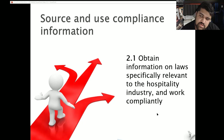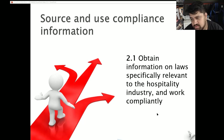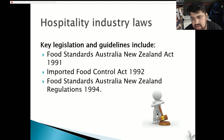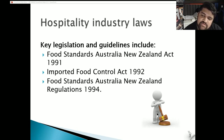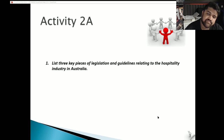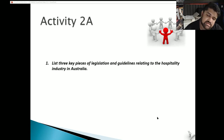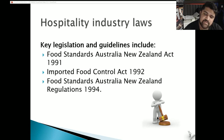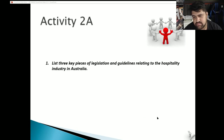2.1: obtain information on laws specifically relevant to the hospitality industry and work compliantly. Key legislation and guidelines include the Food Standards ANZ Act of 1999, the Imported Food Control Act of 1992, and the Food Standards Australia New Zealand Regulations 1994. These are the key pieces of legislation relevant to the hospitality industry in Australia. Once you've completed that activity, come back and we can resume with the next portion.